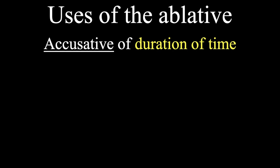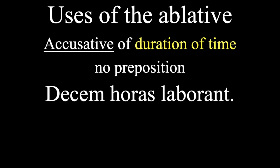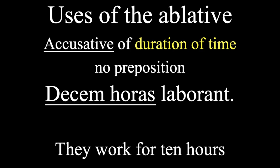Okay. And the next one we'll talk about actually isn't an ablative at all. This is the accusative of duration of time. This tells us how long something takes place. Now, like most of these ablatives that we've seen, it doesn't have a preposition, but it will always contain some unit of time, like hours or days or years. So, if we see a phrase like, decem horas laborant, our accusative of duration of time is over here. And this means, they work for 10 hours.